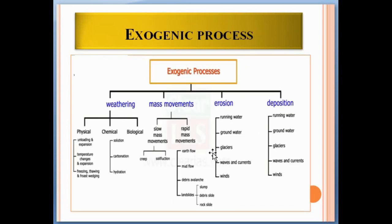Exogenic processes include weathering, mass wasting or mass movements, erosion, and deposition. Weathering can be physical, chemical, or biological. Mass wasting includes slow and rapid mass movements. Erosion occurs due to running water, groundwater, glaciers, waves and currents, and winds. Deposition occurs due to running water, groundwater, glaciers, waves and currents, and winds. These endogenic and exogenic processes are actually very important for geological cycles.